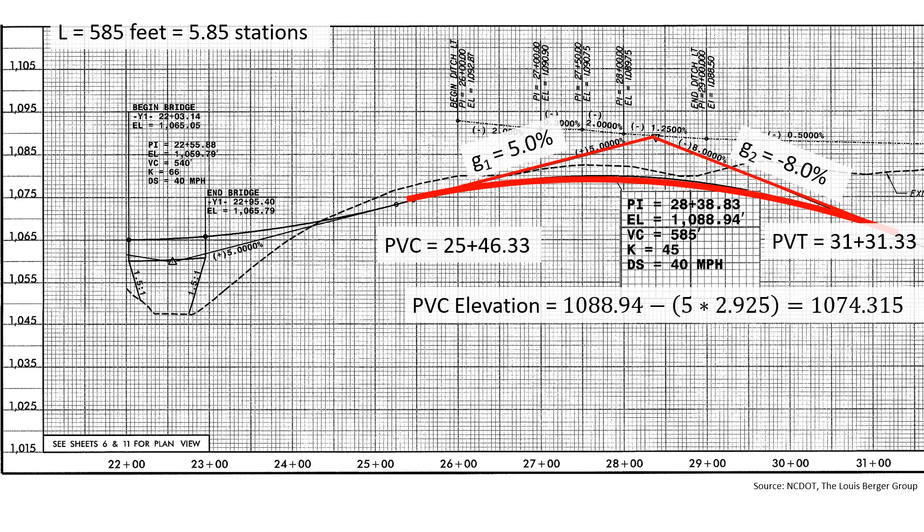We can also determine the station of the PVT. We're going to add half the length to our PVI so that it equals 31 plus 31.33.